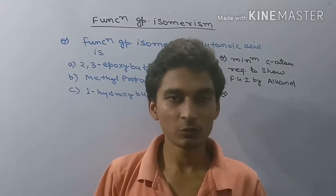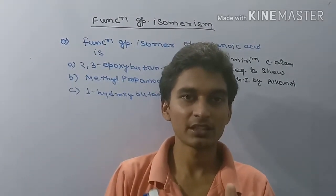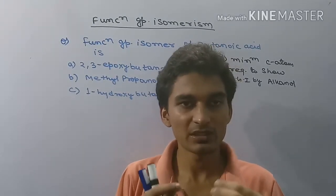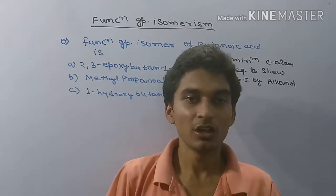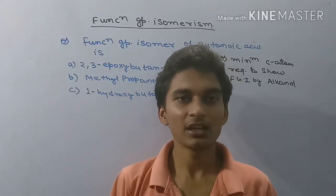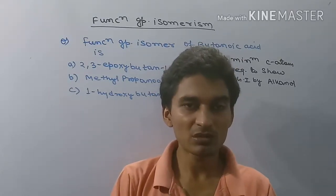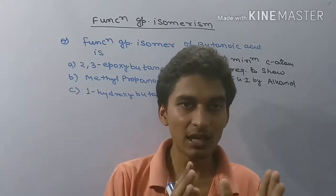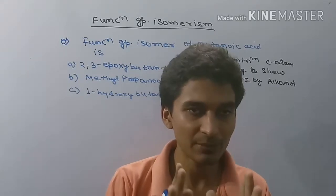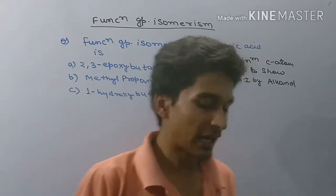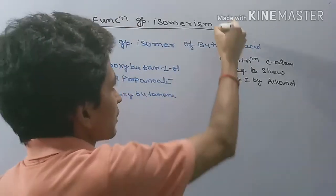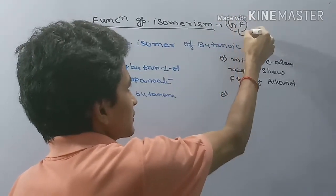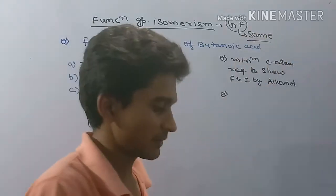In this video we discuss functional group isomerism. The basic concept is: if two compounds have the same general formula, we can call them functional group isomers of each other. So the fundamental reason is that the general formula is the same for both compounds.